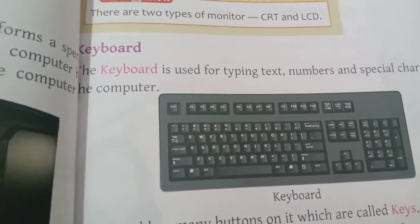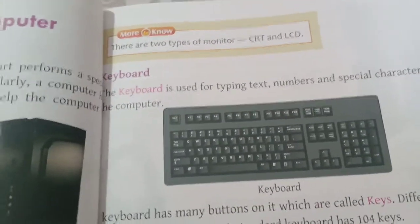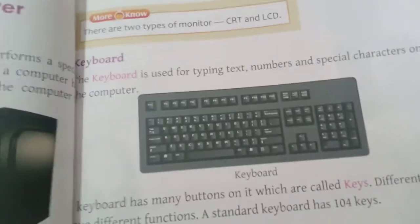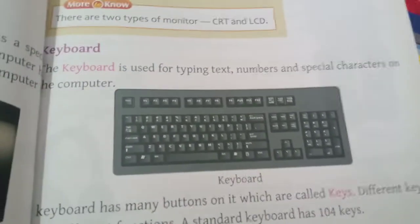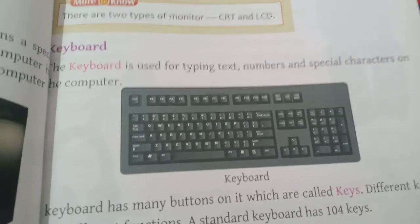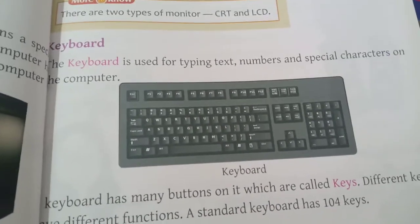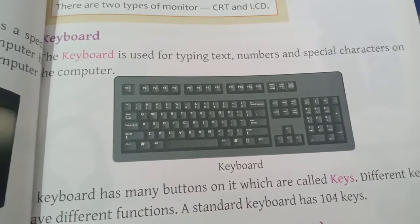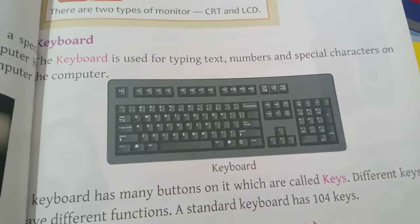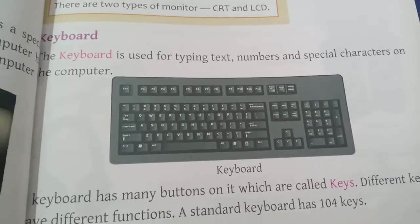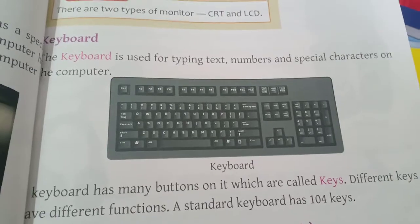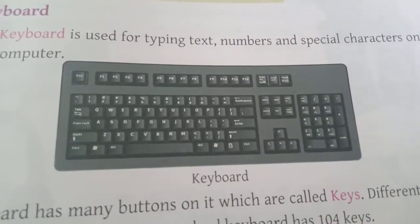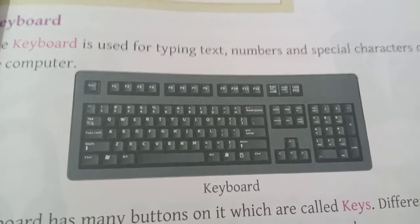The next part is the keyboard. Keyboard is used for typing text, numbers, and special characters on the computer. Text is whatever we type using alphabets — A, B, C, and so on. Special characters are things like slash and other symbols.